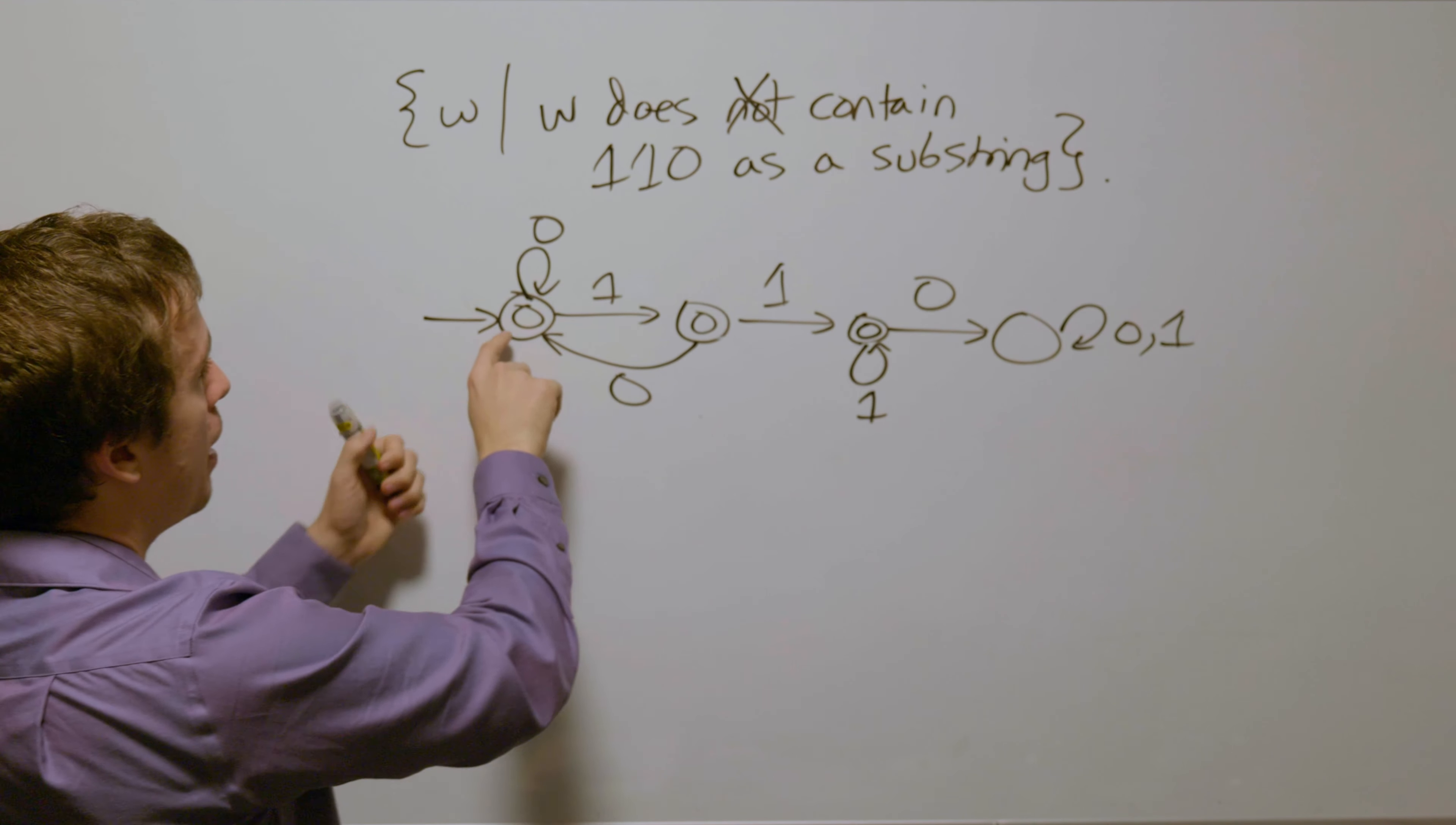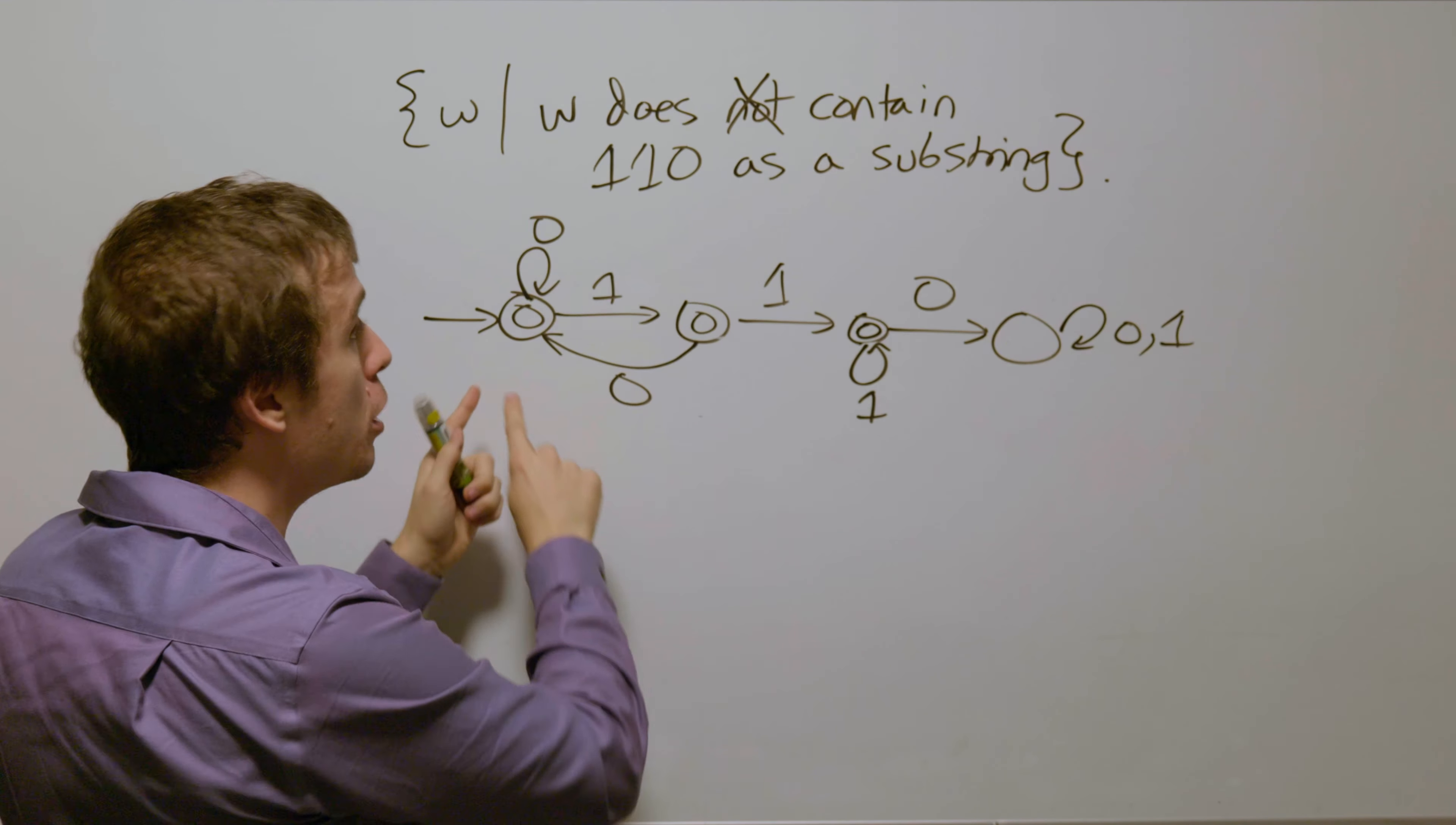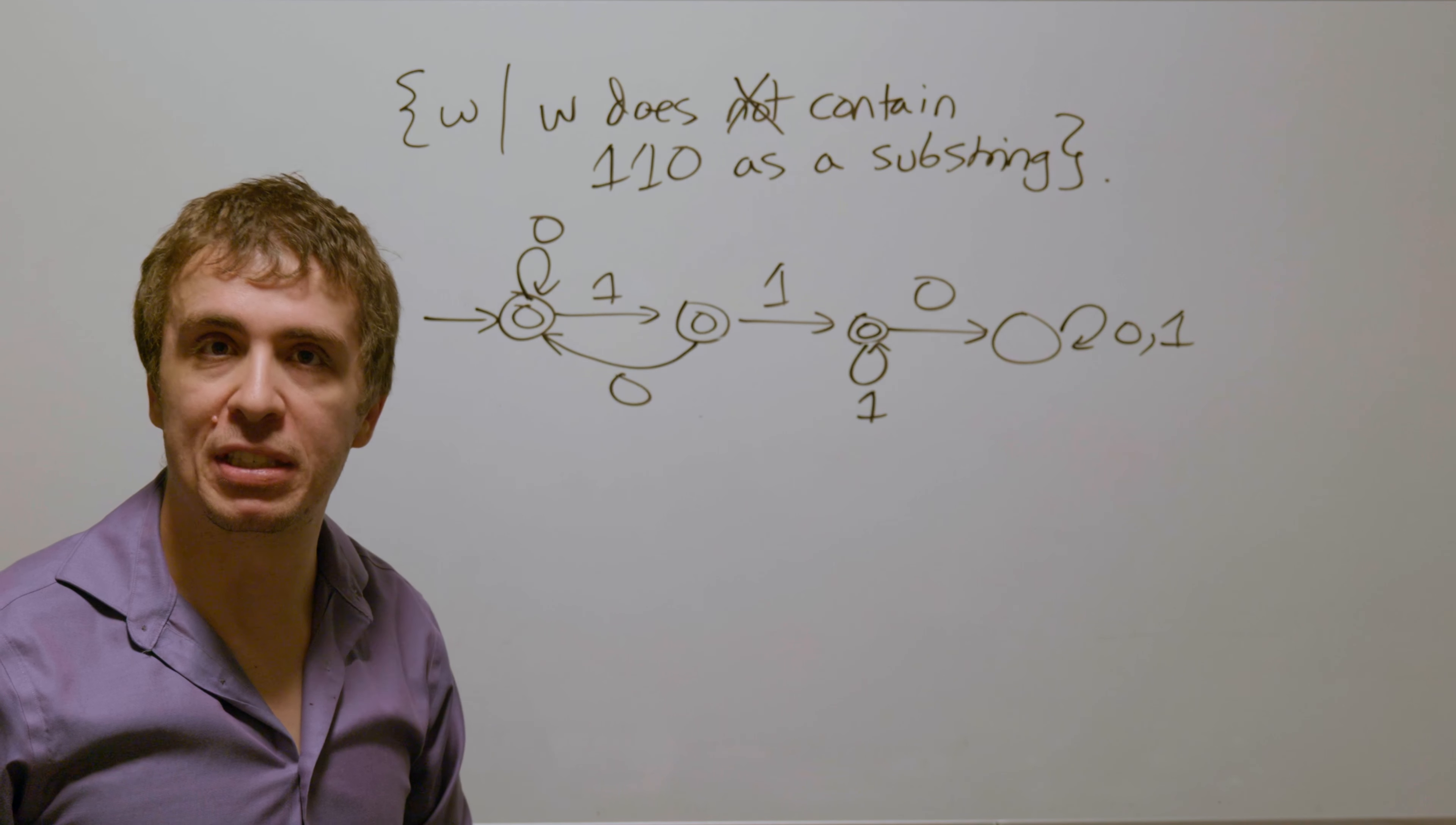And just as a sanity check, if we read 110, that is not accepted. If we do 0110, that is not accepted. Any string of length 2 or less is accepted because we couldn't read three transitions to get over to here. And so therefore this is a DFA for all the strings that do not contain 110 as a substring.